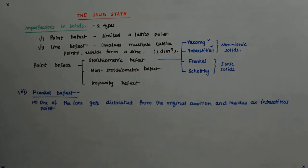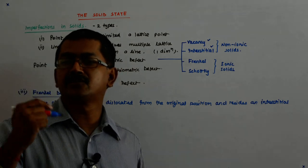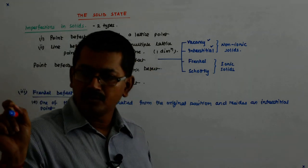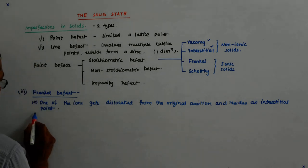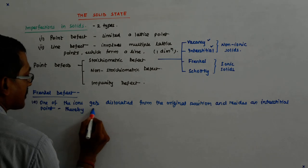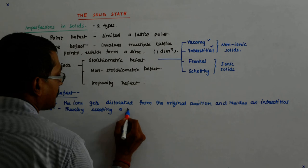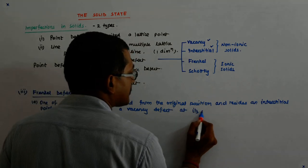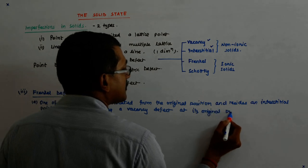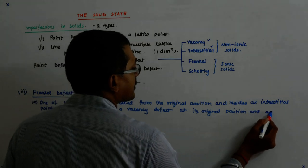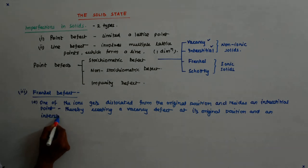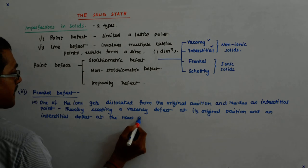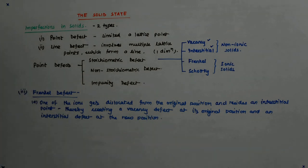So what happens? It creates a vacancy defect at its original position and an interstitial defect at the new position. It just migrates from its original lattice point to an interstitial site. So thereby, creating a vacancy defect at its original position and an interstitial defect at the new position.